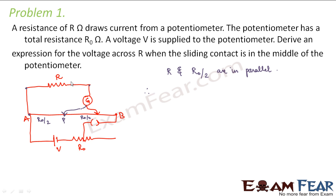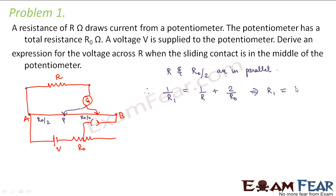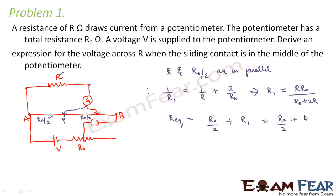Therefore we can find their equivalent resistance. The net resistance of this portion of the circuit: 1/R1 = 1/R + 2/R0. So R1 = R·R0 / (R0 + 2R). Here R1 denotes the equivalent resistance of R and R0/2. The net equivalent resistance of the circuit will be R1 in series with R0/2, which equals R0/2 + R·R0/(R0 + 2R).